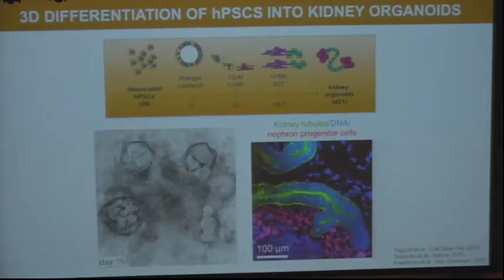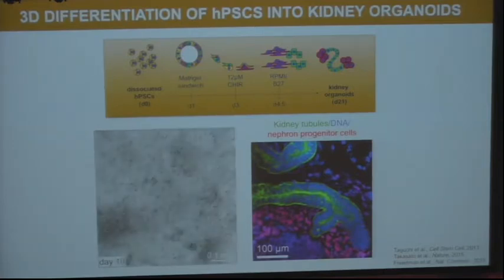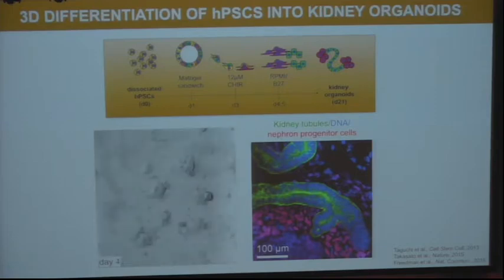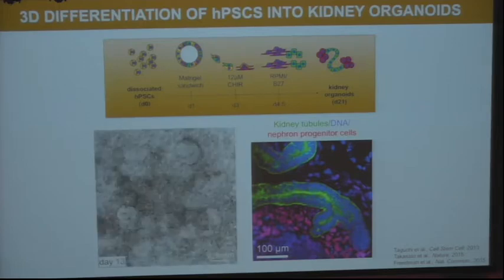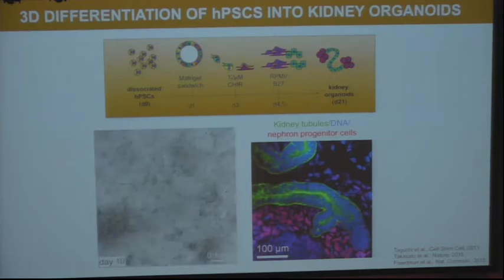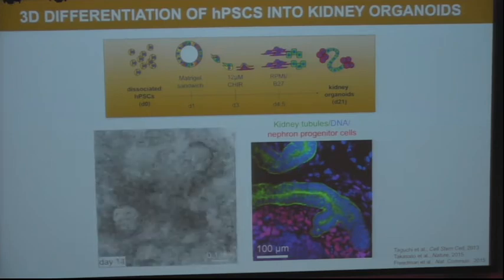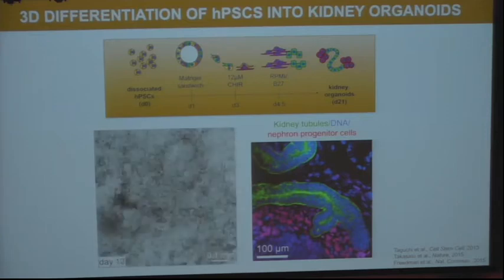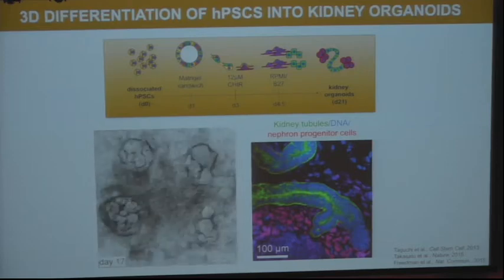Here is our differentiation protocol. We start with dissociated pluripotent stem cells, sandwich them so they grow in 3D as little spheroids, and by treating them with the small molecule CHIR at a high dose, we induce differentiation first into mesenchymal cells. Following that, they undergo a mesenchymal-to-epithelial transition over about two weeks, forming little tubule structures in the dish. We find epithelial structures labeled green — proximal tubular markers — adjacent to nephron progenitor stem cell populations, which are mesenchymal cells known to differentiate into kidney during development.